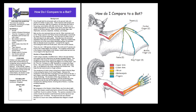Let's take a quick look at three Project EduBat lessons to see how they work. In the Project EduBat lesson "How Do I Compare to a Bat," a lesson at the elementary school level, students learn a lot about bats and themselves by comparing various aspects of their anatomy, physiology, and behavior.